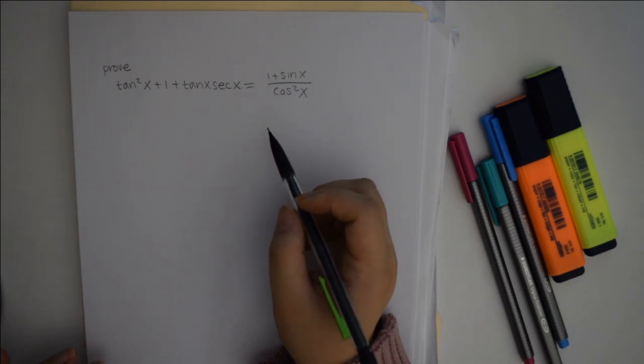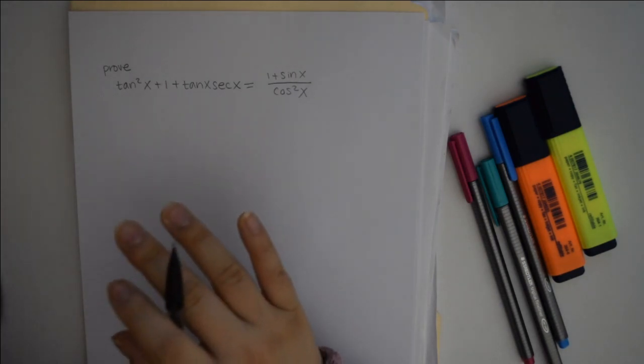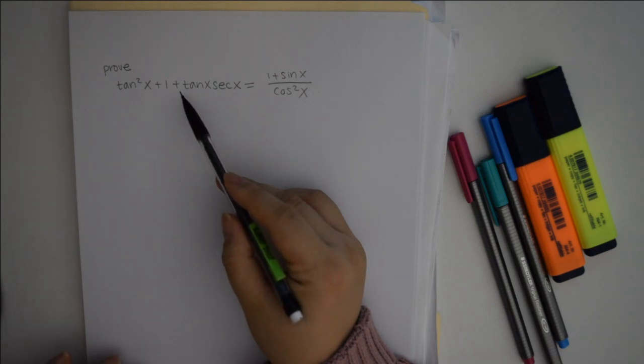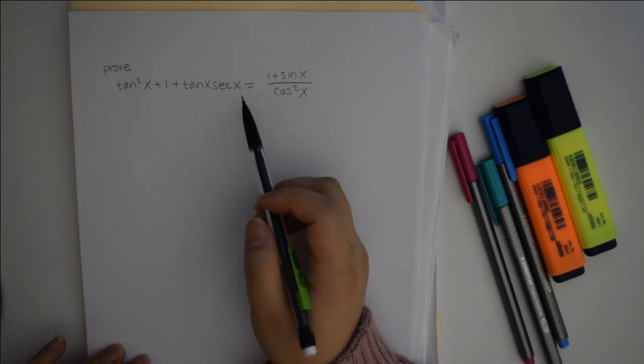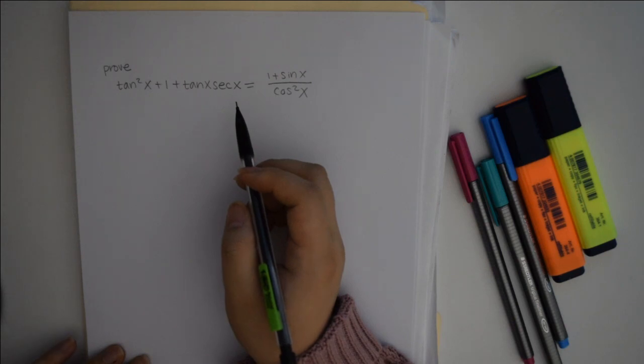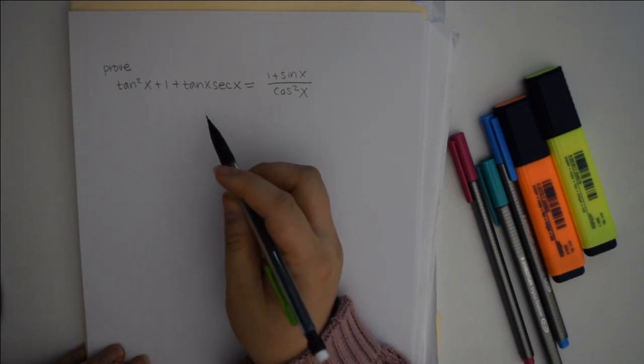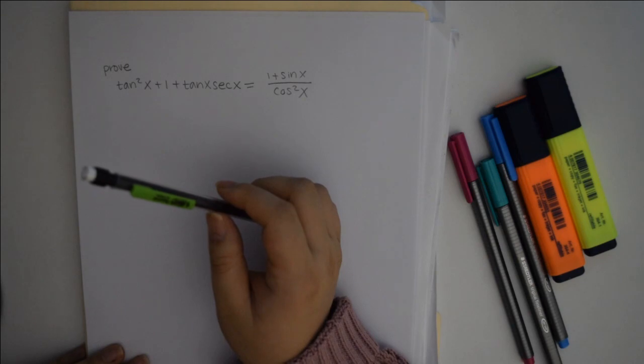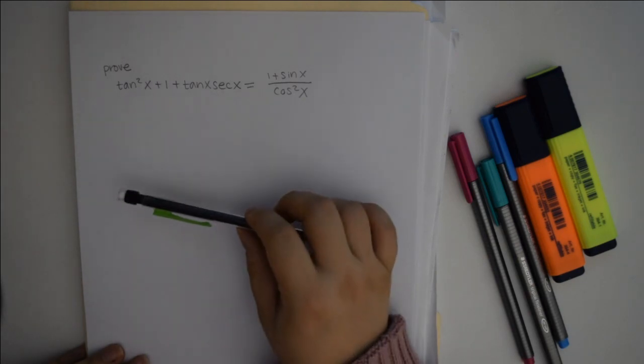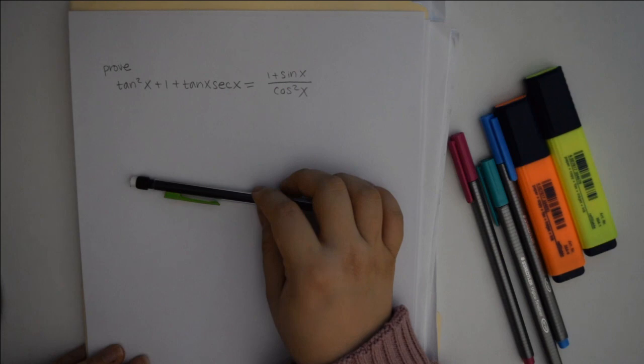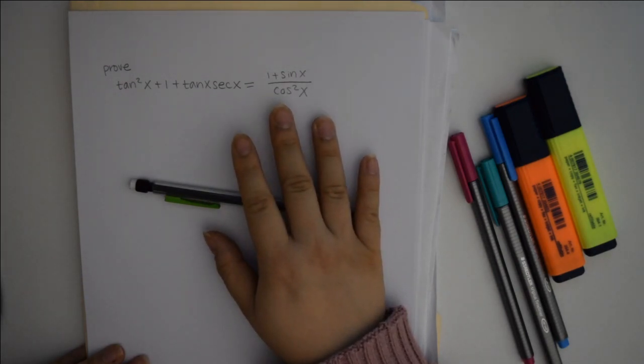Since my last couple of videos have been more explanation based and tutorial based, I thought that today we could work through a specific practice problem for proving trig identities. And this topic in general was requested by an awesome viewer that we have here, and they said that this is their arch enemy. But I thought, hey, you know what, I'm here, let's defeat this thing once and for all. Maybe even get to enjoying it a little bit, because it can be fun.